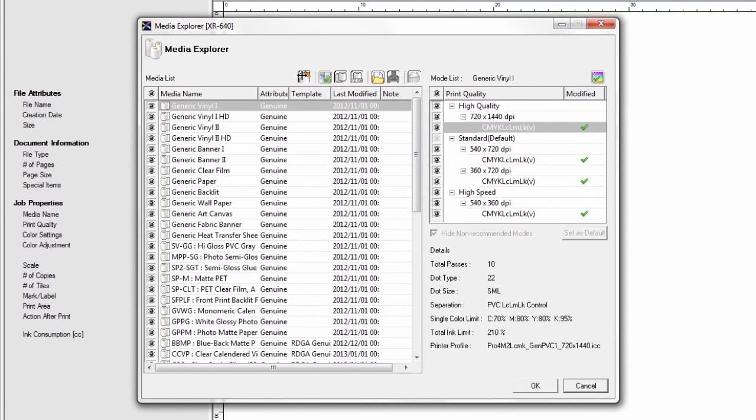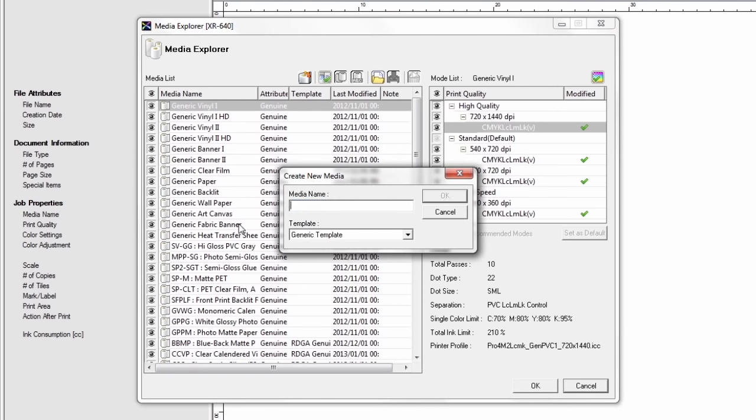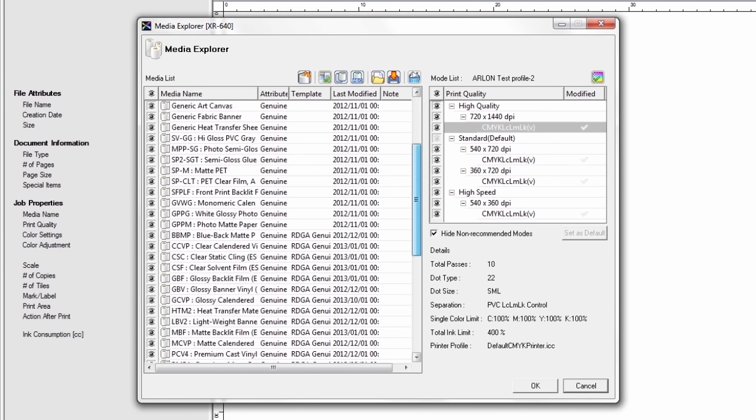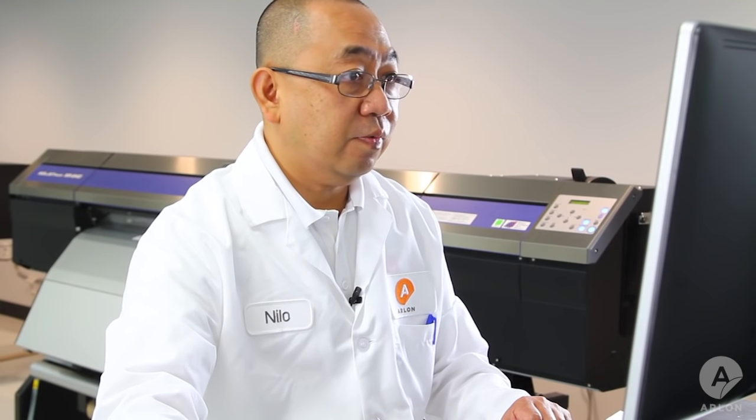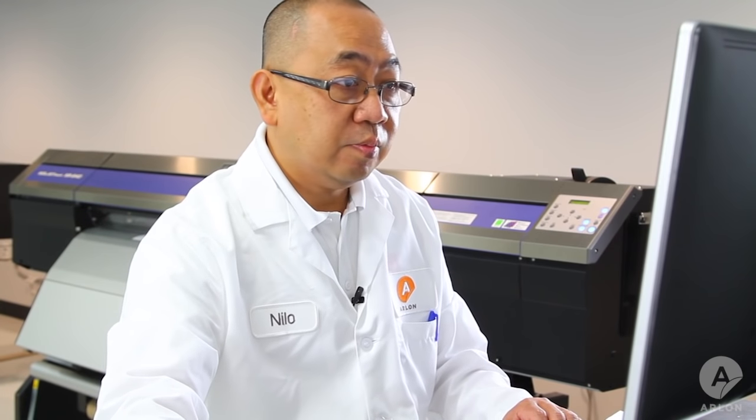Select create new media and name the profile as desired, then select a template to use. Your media is located in the bottom of the list. Double-click on the new media to set the media characteristics.